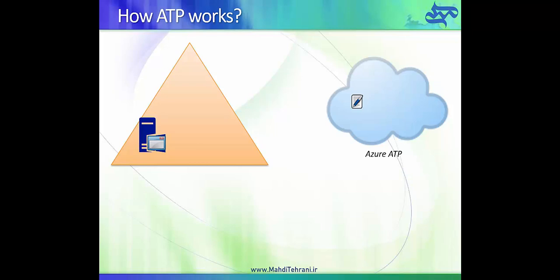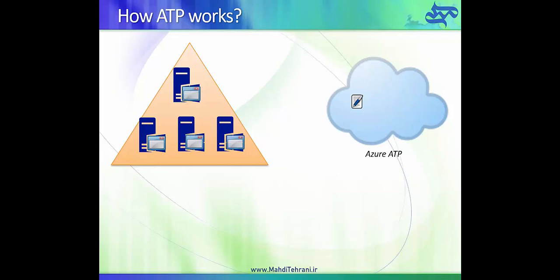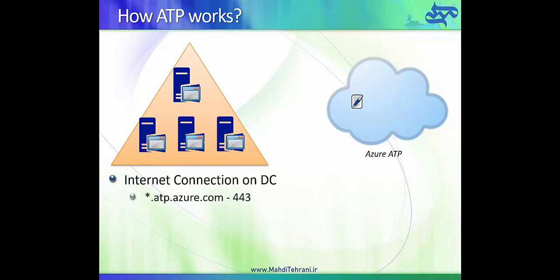This is the direct sensor mode. If we have different domain controllers in our domain, all of them need to have this sensor or agent installed on them. This direct sensor mode has advantages and disadvantages. The first disadvantage is that domain controllers need to talk to the internet — though you can use a proxy, allowing only the URL atp.azure.com on port 443, in order to allow the information to flow to Azure ATP.